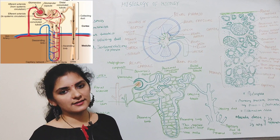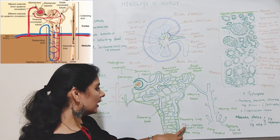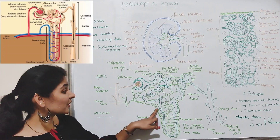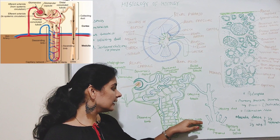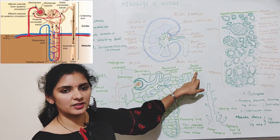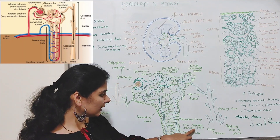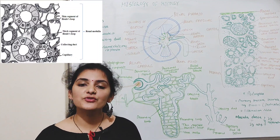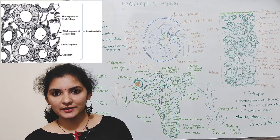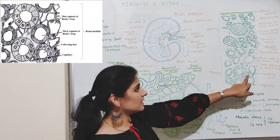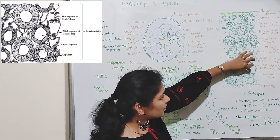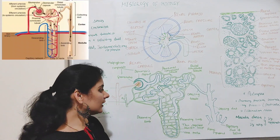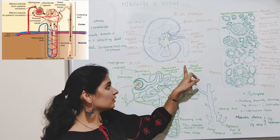The loop of Henle mainly consists of three parts: the descending limb, the ascending limb, and the thin segment, and it is present in the medulla region. The descending limb is structurally similar to the proximal convoluted tubule, and the ascending limb is structurally similar to the distal convoluted tubule. The thin segment is present as a U-shape in the medulla and is made up of a single layer of flat squamous cells with a large central lumen.